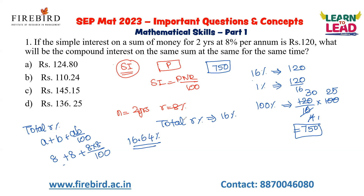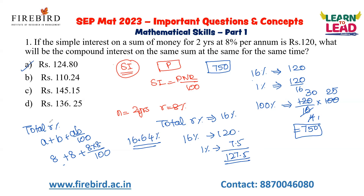I know that 16% of 750 is 120. Now, 1% of 750 is 7.5. So adding 0.64% more: my answer will be just above 120. Specifically, it should be less than 127.5 and greater than 120. The only option in that range is option A, which is 124.80. You need to apply basic concepts while solving each question, and this skill comes only with practice.